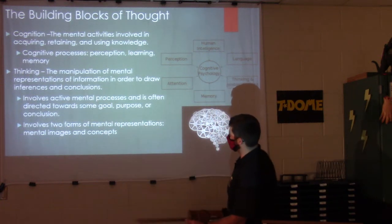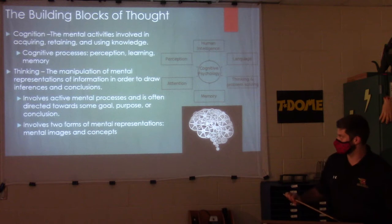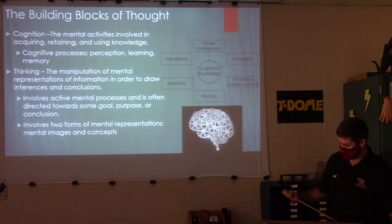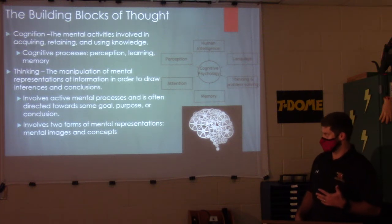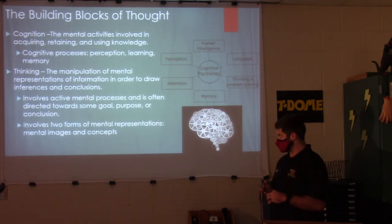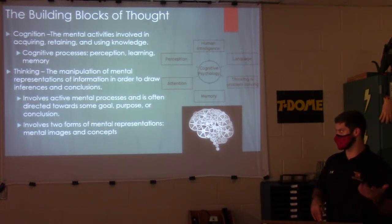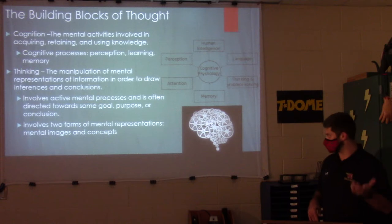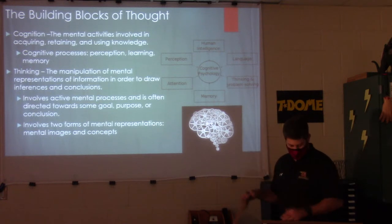Thinking is the manipulation of mental representations of information in order to draw inferences and conclusions. It involves an active mental process and is often directed towards some goal, purpose, or conclusion. It involves two forms of mental representations: mental images and concepts.